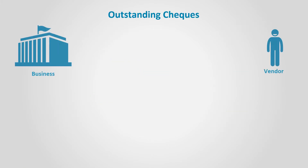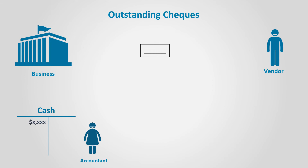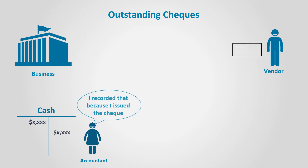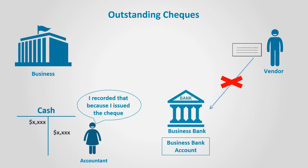Outstanding checks. Here, the business has issued a check to a vendor, but the vendor hasn't cashed the check yet. The accountant has updated the books when the check was issued, but the bank hasn't deducted the amount yet as it has not been cashed. Eventually, when the vendor cashes it, the bank will deduct the amount. The reconciliation entry in this case is to deduct the amount of the check from the bank's balance.